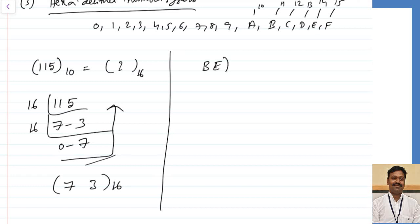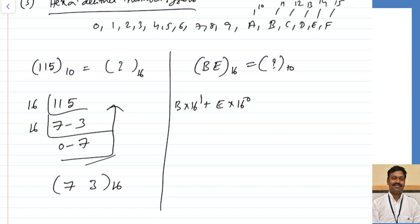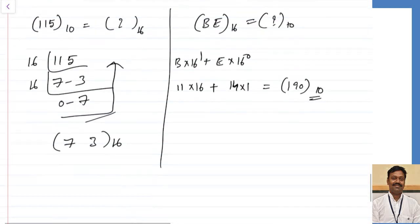Now let us convert BE in base 16 to base 10. Assign weights 16⁰ and 16¹. So: E×16⁰ + B×16¹ = 14×1 + 11×16 = 14 + 176 = 190 in base 10.